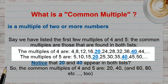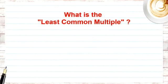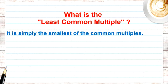You can see that 20 and 40 appear in both the multiples of 4 and the multiples of 5. So the common multiples of 4 and 5 are 20, 40, 60, 80, 100, 120, and it goes on. The least common multiple is simply the smallest of the common multiples. Between 4 and 5, the common multiples are 20 and 40 — 20 is smaller, so the least common multiple is 20.